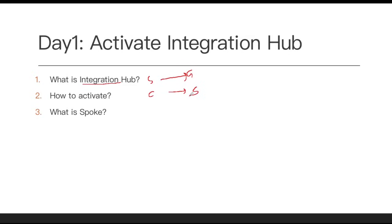Before we go to the ServiceNow screen, let's talk about what a Spoke is. A Spoke is like a package. In this package there are a lot of out-of-box activities that you can use depending on your requirement — you don't need to build custom things. We call them Jira Spoke, Zoom Spoke. Once you install a Spoke, you can use those actions in your Flow Designer.